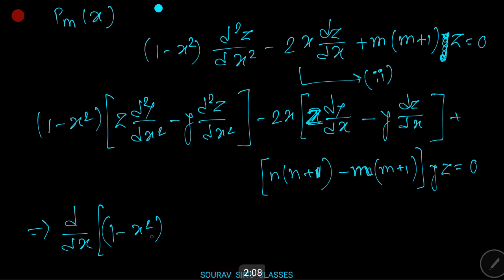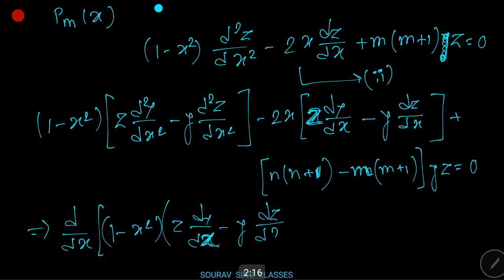That implies we can write: d/dx of [(1 minus x squared)(z dy/dx minus y dz/dx)] plus n(n+1) minus m(m+1) times yz equals zero.